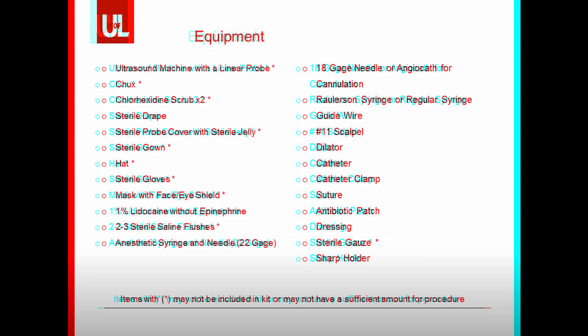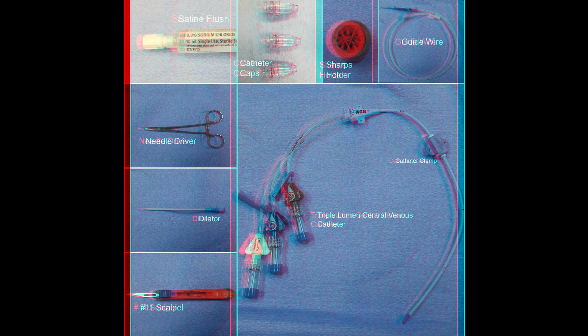Having the right equipment at bedside is essential to placing a central venous catheter. Required equipment includes: an ultrasound machine with a linear probe, chucks or absorbent non-permeable pad, chlorhexidine scrubs or other antibacterial pre-procedure wash, sterile drape, sterile probe cover with sterile ultrasound jelly, sterile gown, hat, sterile gloves, mask with face and eye shield, 1% lidocaine without epinephrine, 2–3 sterile saline flushes, a syringe for anesthetic with a small gauge needle, an 18-gauge needle or angiocath for cannulation, a Rawlerson or regular syringe, guide wire, number 11 scalpel, dilator, the catheter, catheter clamp, suture, antibiotic patch, sterile dressing, sterile gauze, and a sharps container.